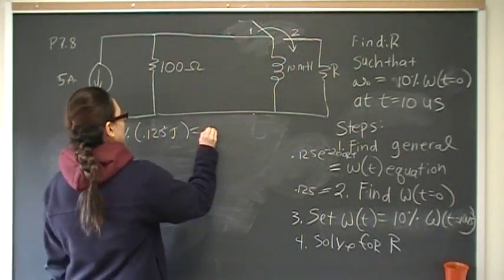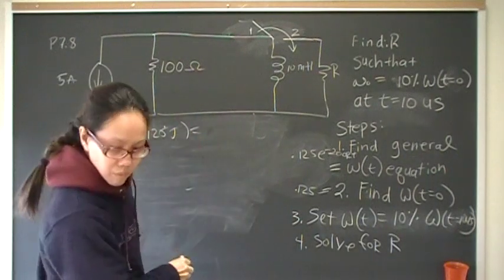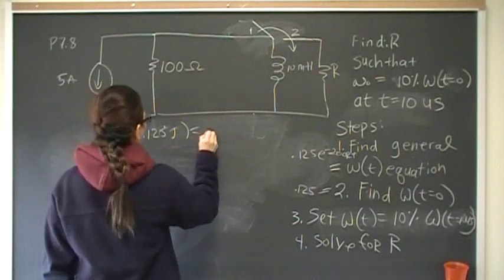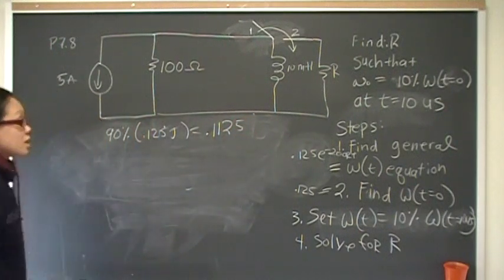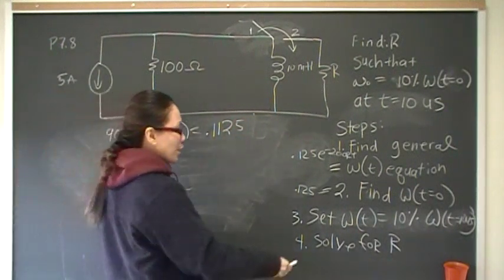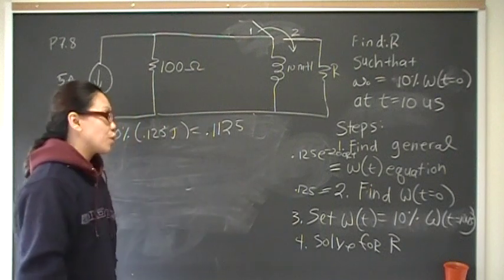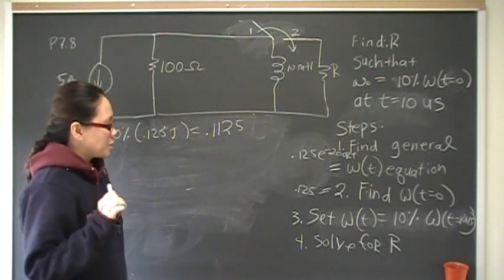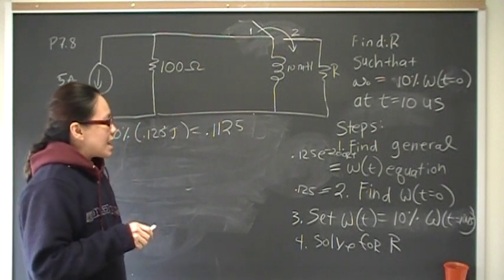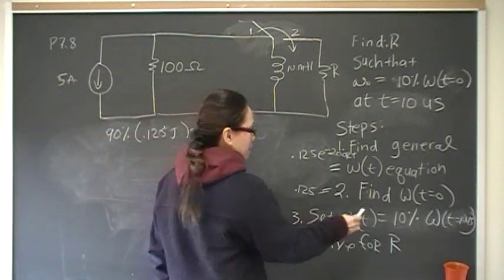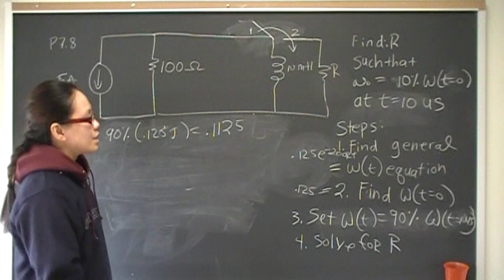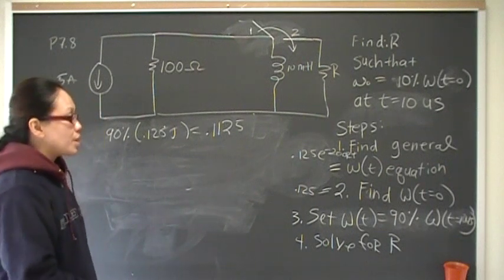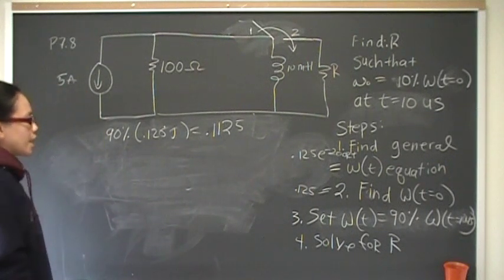Okay, so 90%, we take 0.9 times 0.125. That gives me 0.1125. That's how much is left. So my bad, if you actually followed these instructions, you would have gotten the wrong answer, so sorry about that, you should actually set this to 90%, because the problem states to find 90% energy remaining, 10% dissipated.